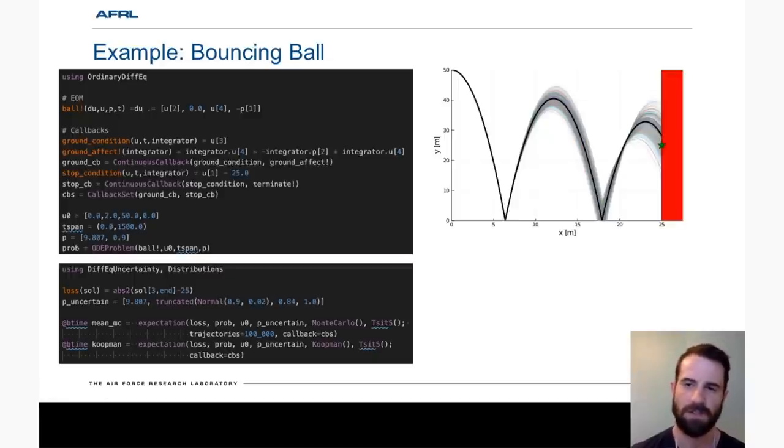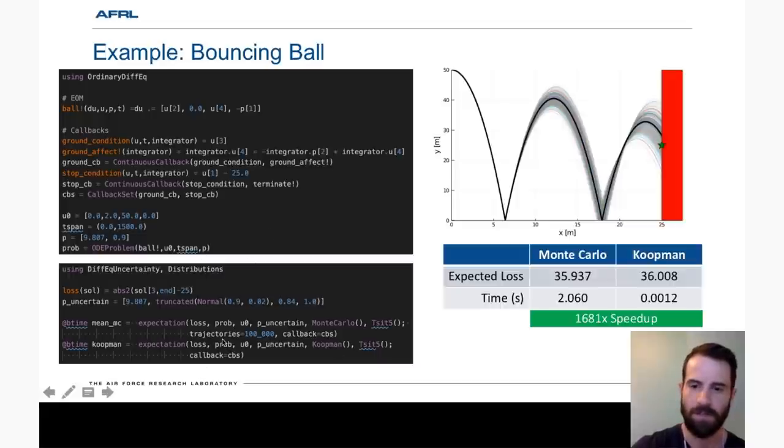We're also interested in computing the expectation of the square miss distance of this star on the wall. So to do this, we set up our loss function and our parameter array. Here we say gravity is deterministic, so we get a numerical value and then a distribution for the coefficient. And we then compute the expectations as follows.